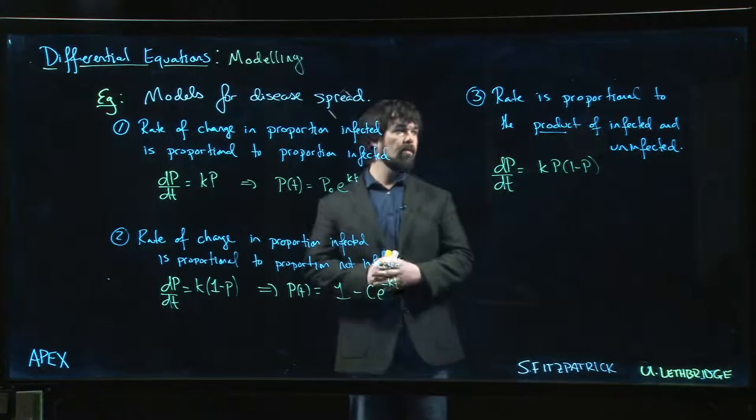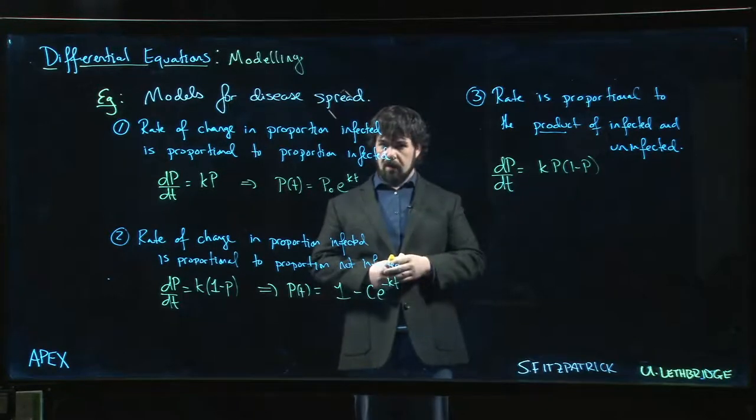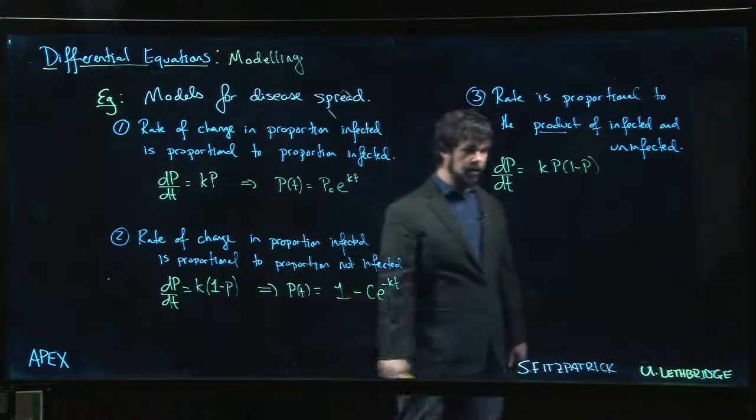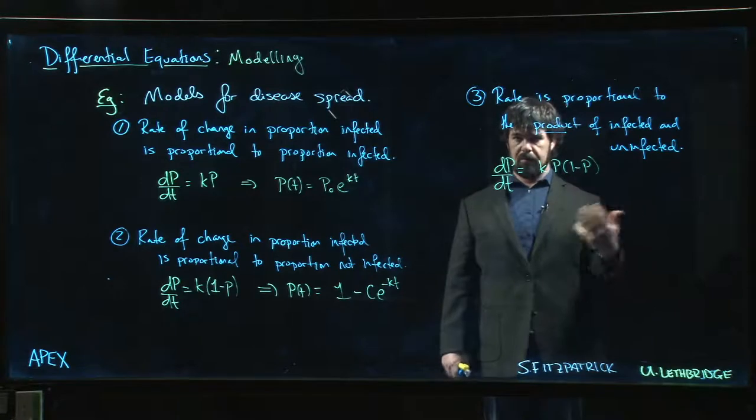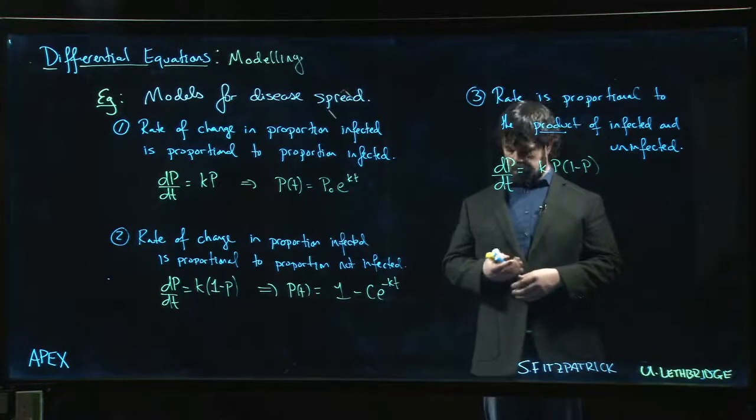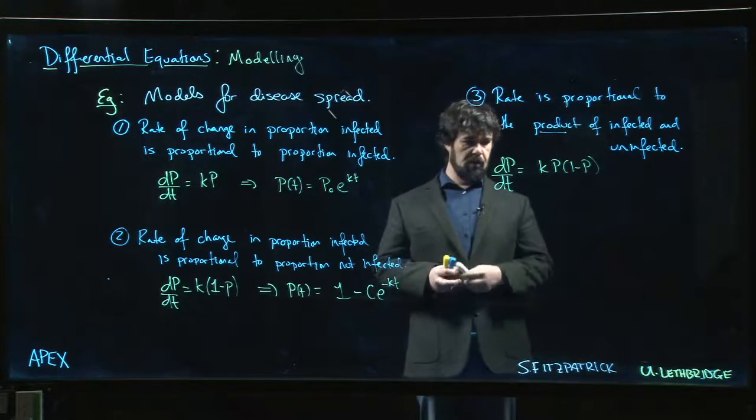We'll look at one last model for the rate of disease spread. This one here might remind you of the logistic equation. In fact, that's exactly what it is - a logistic equation where the carrying capacity is one, when the proportion hits the full population. This is another one we've already solved.